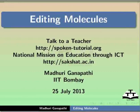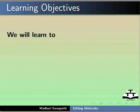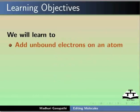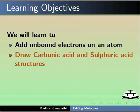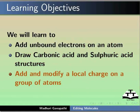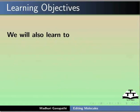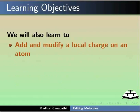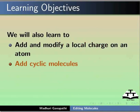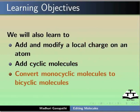Hello everyone. Welcome to the tutorial on editing molecules in GCamPaint. In this tutorial we will learn to add unbound electrons on an atom, draw carbonic acid and sulphuric acid structures, add and modify a local charge on a group of atoms and on an atom, add cyclic molecules, and convert monocyclic molecules to bicyclic molecules.